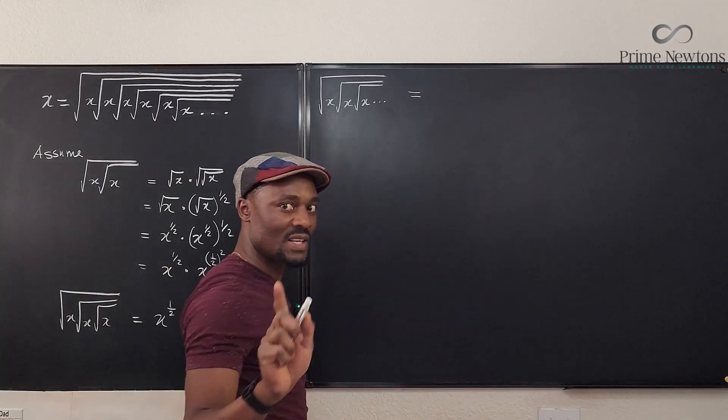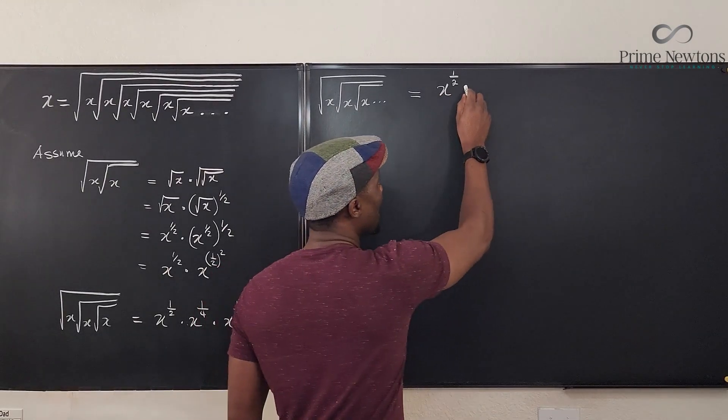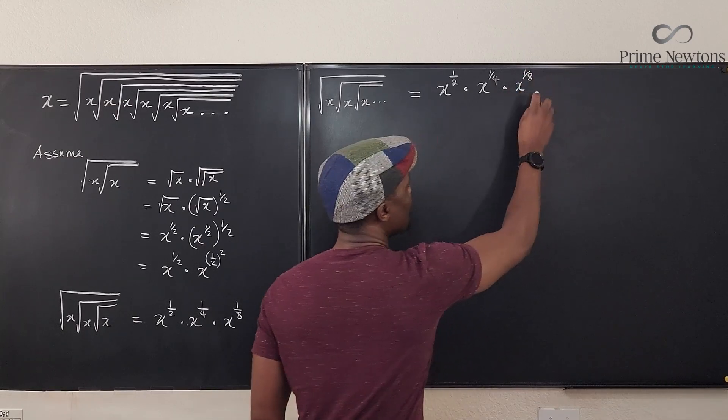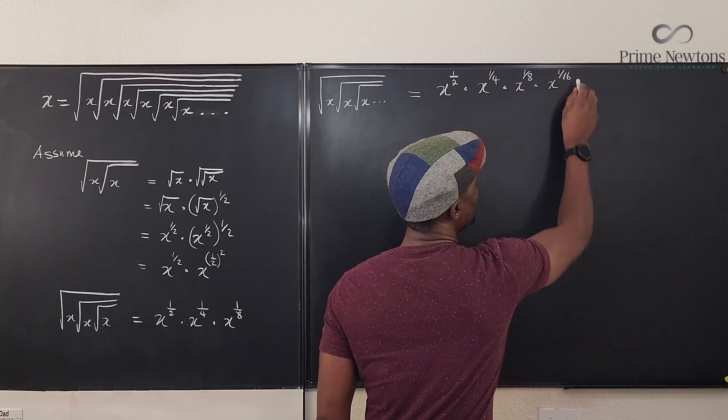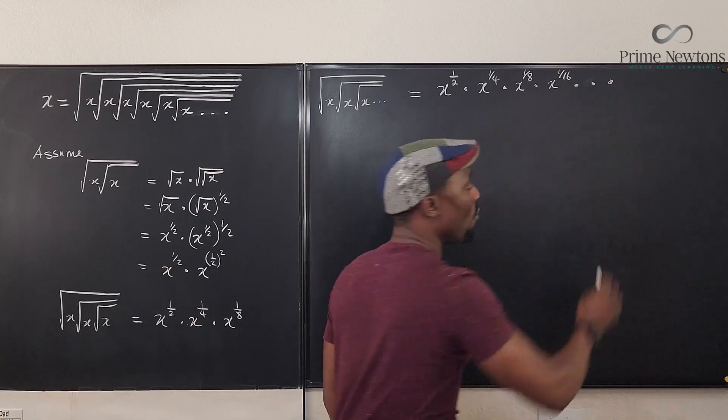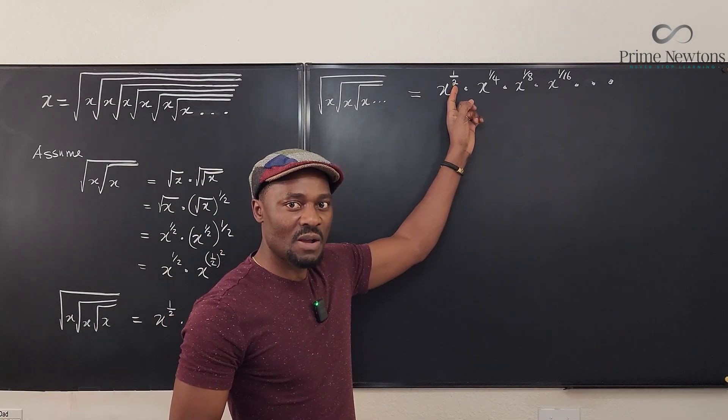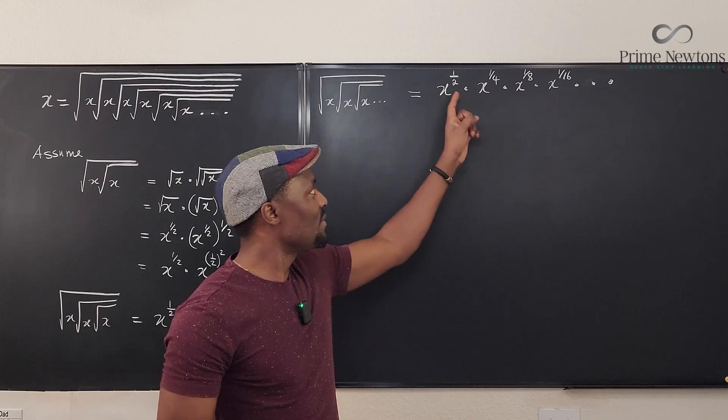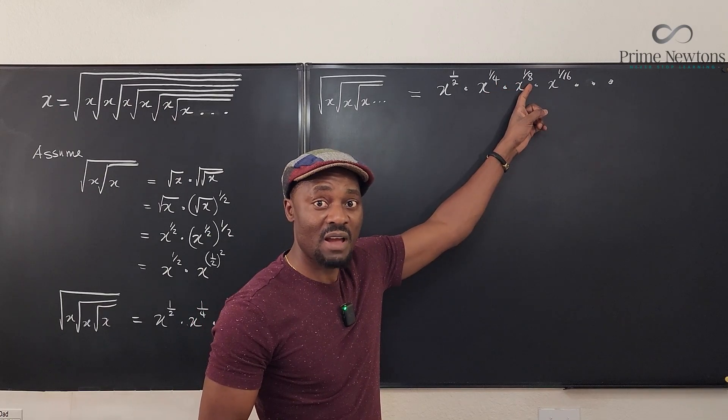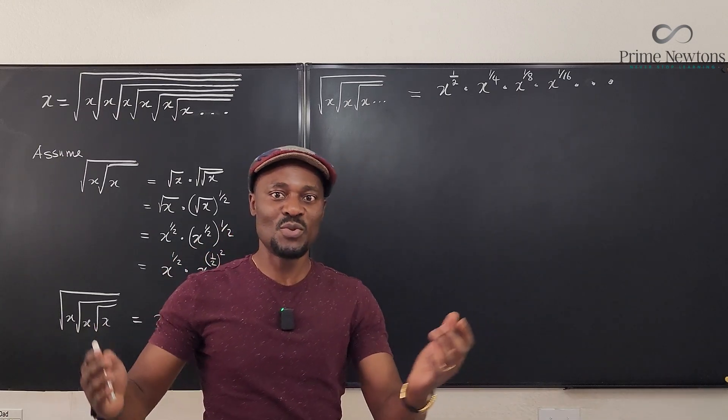can be written as x to the one half multiplied by x to the one fourth multiplied by x to the one eighth times x to the one sixteenth, and so on. What you've seen now is that there is a continuous increase in the denominator. It's as if you multiplied this by one half, you multiplied this by one half, multiplied this by one half to get the next one. And the sequence continues like that, because the square root simply means raised to power one half.